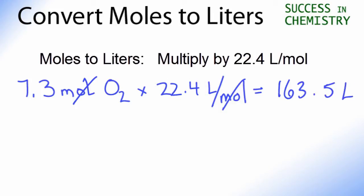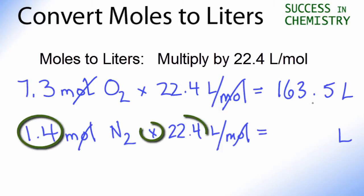So use the example we just did and press pause and try to solve this one. Here we're going from moles to liters, so we're going to multiply by 22.4 liters per mole. Moles will cancel out and we'll be left with 1.4 times 22.4, which will give us 31.4 liters.